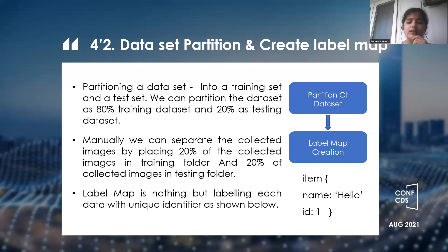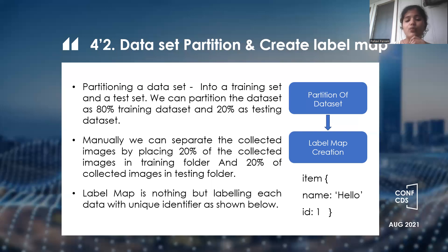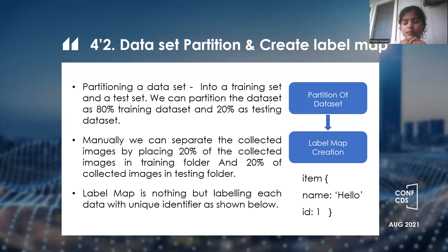As you can see, here I have stated one label map entry for one sign. The item name is 'hello' and we are giving it an ID of one for that particular sign. This is the label map creation process.